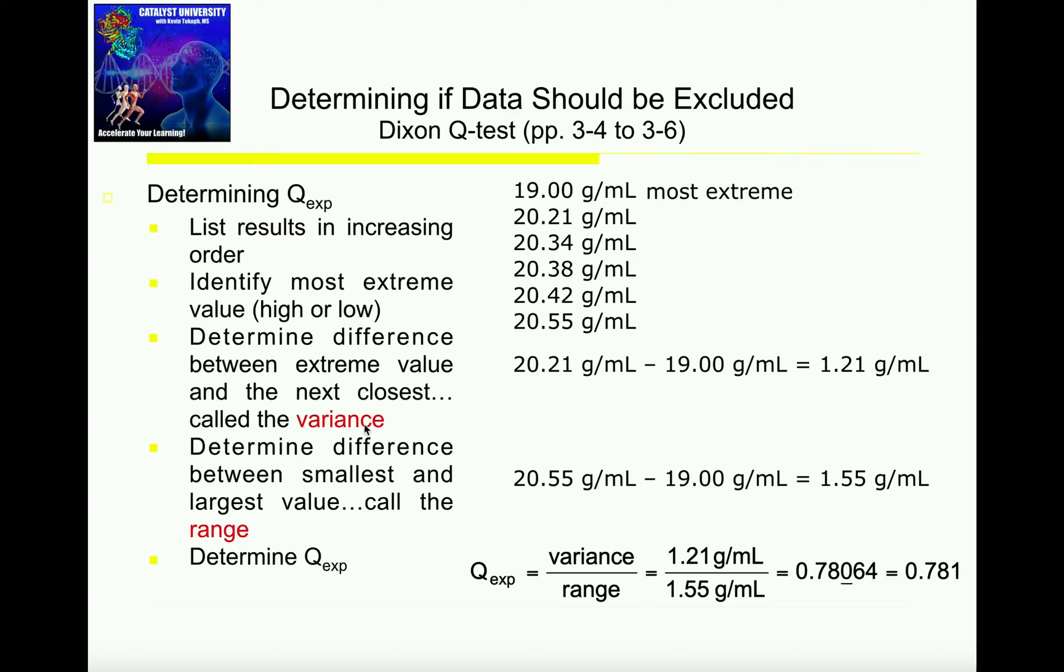Once we've calculated the variance and the range, we can calculate what's called Q experimental. So we're going to have a Q experimental, which is calculated, and then we're going to have a Q critical, which we'll look up in a table. To calculate Q experimental, I take the variance and divide by the range. The variance was 1.21, so 1.21 divided by 1.55.